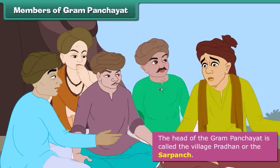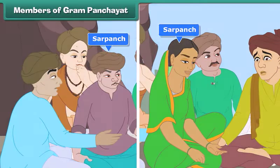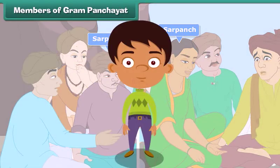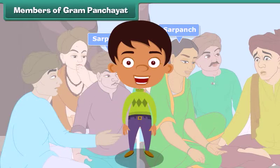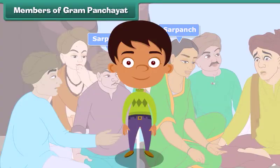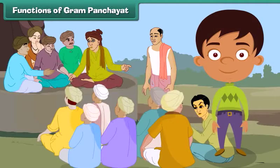A gram panchayat consists of five members. The head of the gram panchayat is called the village pradhan or the sarpanch. The sarpanch can be a male or a female. The members of a gram panchayat hold meetings to solve the problems of the villagers. The panchayat solves land, water, and other disputes among villagers.